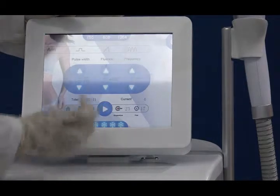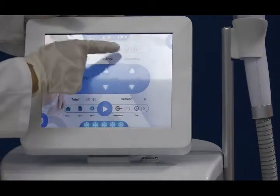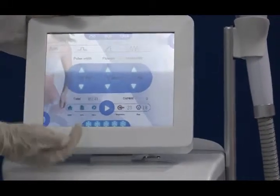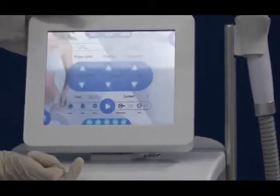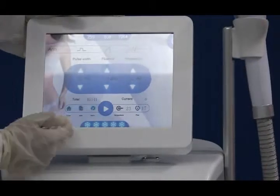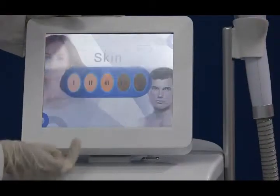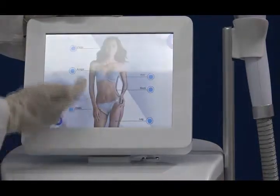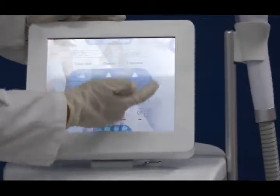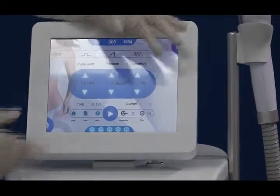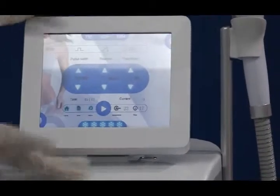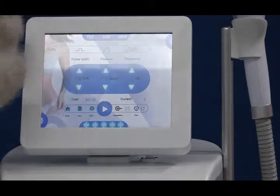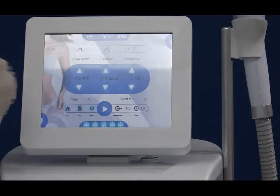For example, now we adjust the frequency to fluence, pulse-wise, right? Then we click safe. This one. And then we return to home. Okay? Skin type three, woman, arm. You see? All the parameters we set before, all here. You only need to adjust a little bit. It's okay. So it's very simple to use this machine. Very human intelligence.